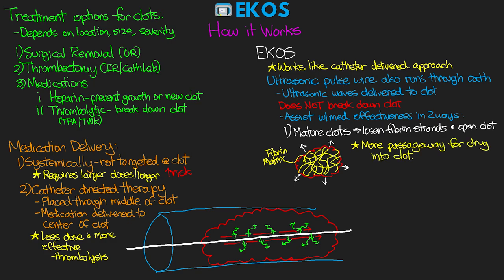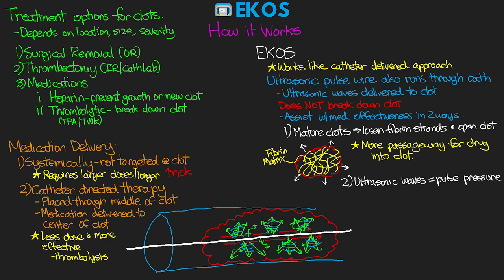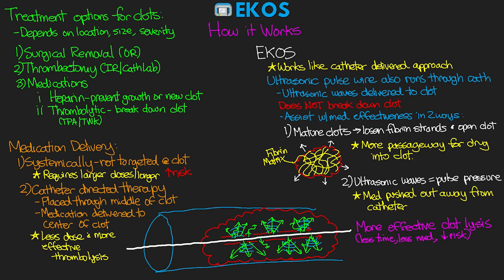In addition to opening the clot, the ultrasonic waves also create a pulse pressure that helps to disperse the medication out and away from the catheter. Instead of just flowing out the holes and running along the length of the catheter with the blood flow, the medication is almost pushed outward, and combined with that looser fibrin matrix, the thrombolytic can more effectively be delivered throughout the clot. This means more effective clot lysis requiring less time, less medication, and less risk — as much as four times less medication compared to systemic delivery, and nearly 70% less medication than standard catheter-directed therapy alone.